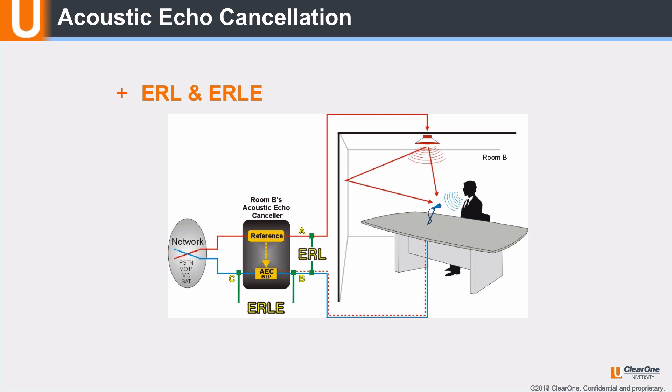ERL, or echo return loss, is a measure of the room's echo cancellation performance. ERL is the loss in level of the receive audio or acoustic echo as it travels between the speaker and the microphone, including mic and loudspeaker gain, the difference between point A and B. ERL is directly proportional to the amount of acoustic treatment and mic to speaker distance.